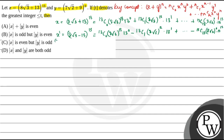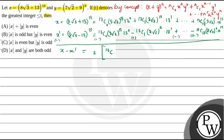If we subtract these two equations, we get x - x' = 2·[C(13,1)·(8√3)^12·13 + C(13,3)·(8√3)^10·13^3 + ...]. Since x - x' is a multiple of 2, the greatest integer [x] is even.